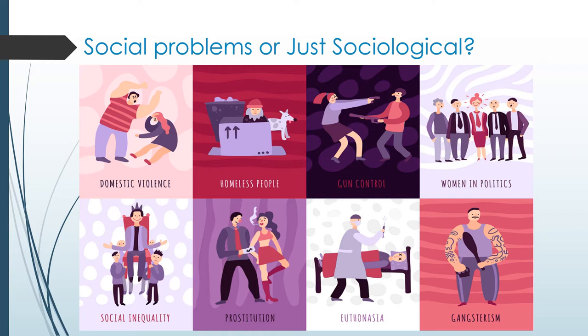Some alternative social problems to think about include domestic violence, homelessness, gun control (particularly in the US), women entering politics, social inequality, the monarchy, prostitution, euthanasia, and gangs. These are all social problems, but not all are sociological problems. Sociologists would be interested in all of them, but social problems are those that society is generally concerned about — so in the UK, gun control, homelessness, and euthanasia may not be major priorities for many people.